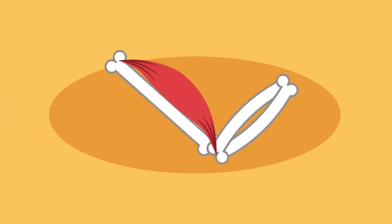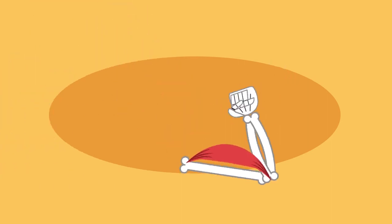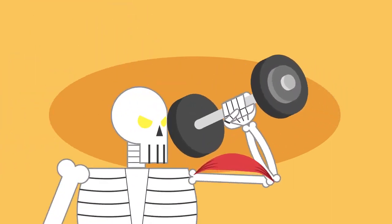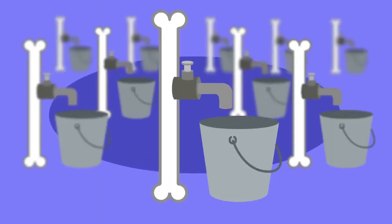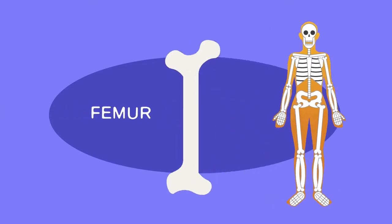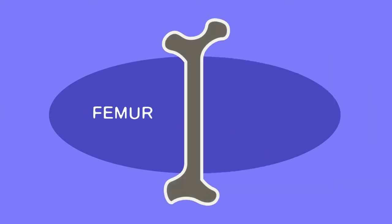Bet you didn't know blood was made in your bones. Some bones, such as the femur in the leg, are hollow. Inside the middle of them is bone marrow, which is where blood cells are made.